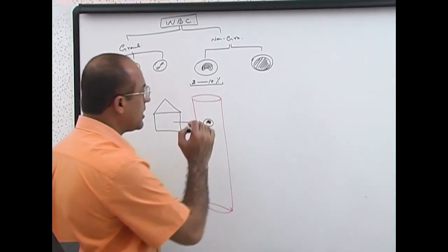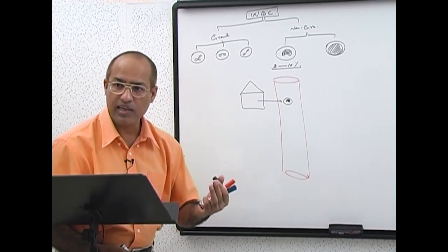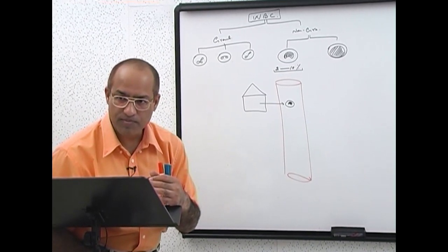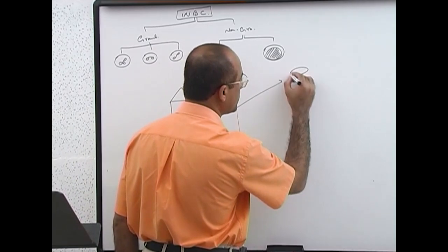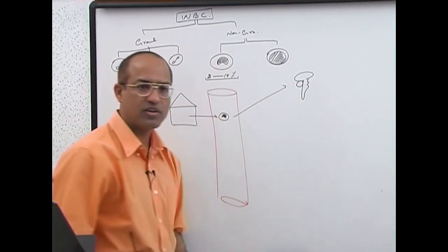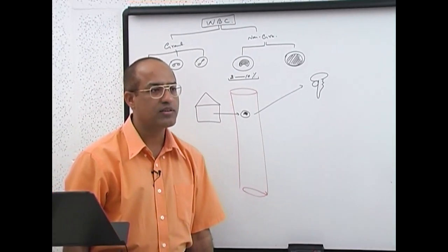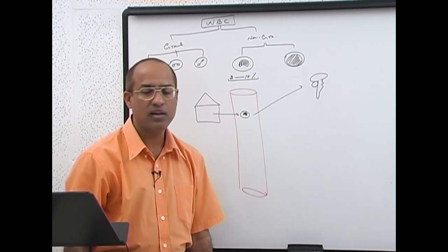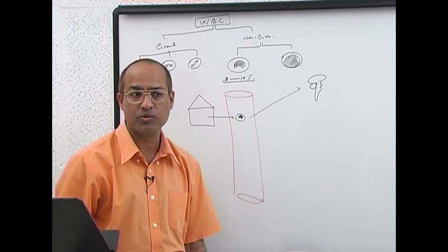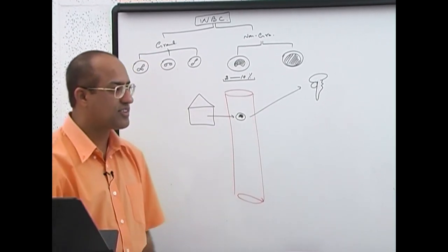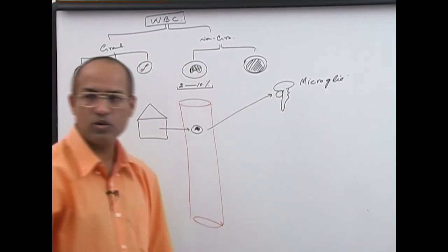Once monocytes go to the tissues, in some tissues monocytes are present all the time, even if the tissues are not inflamed. There are other tissues where monocytes go only when there is injury and inflammation. The tissues where monocytes normally take permanent residence include, number one, the central nervous system. Monocytes go to the developing neural tube and, as the CNS develops, those monocytes convert into very special cells. What are those cells called?